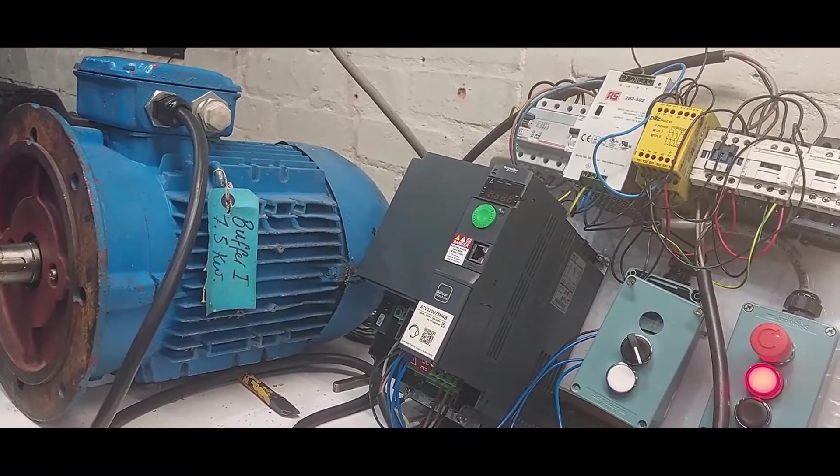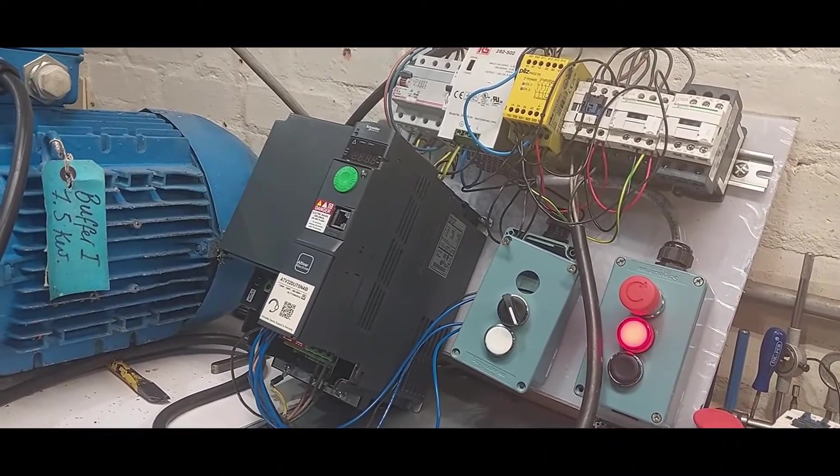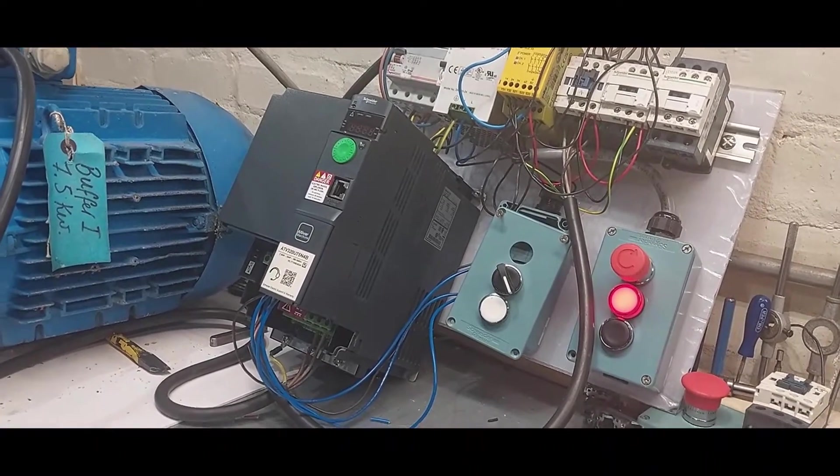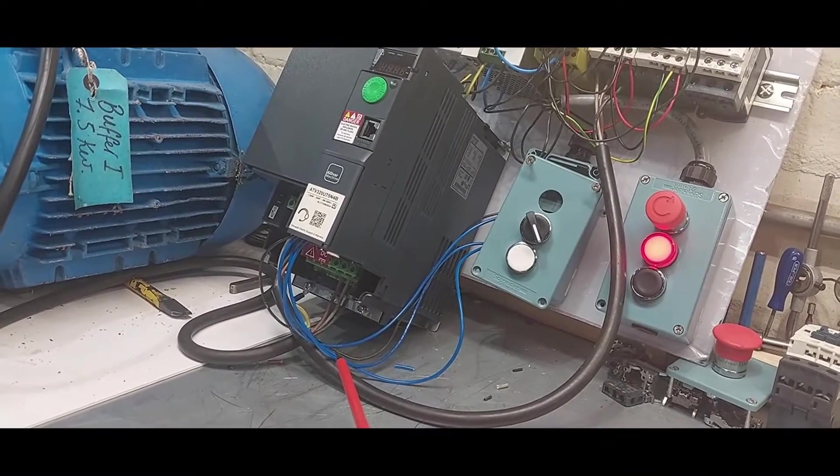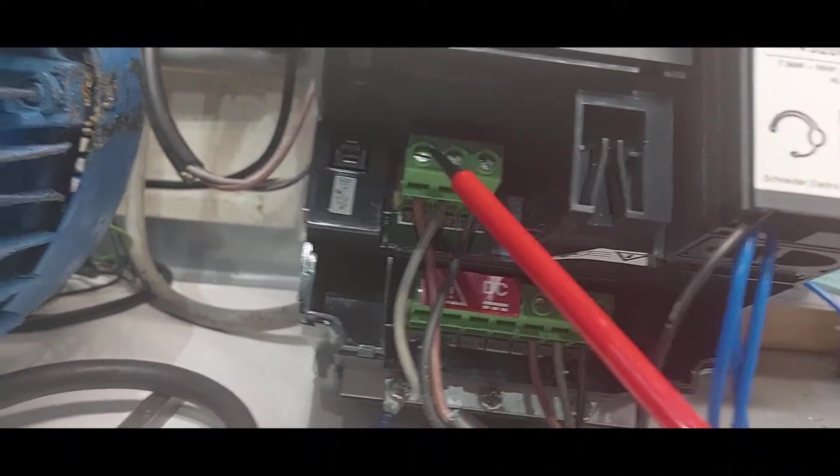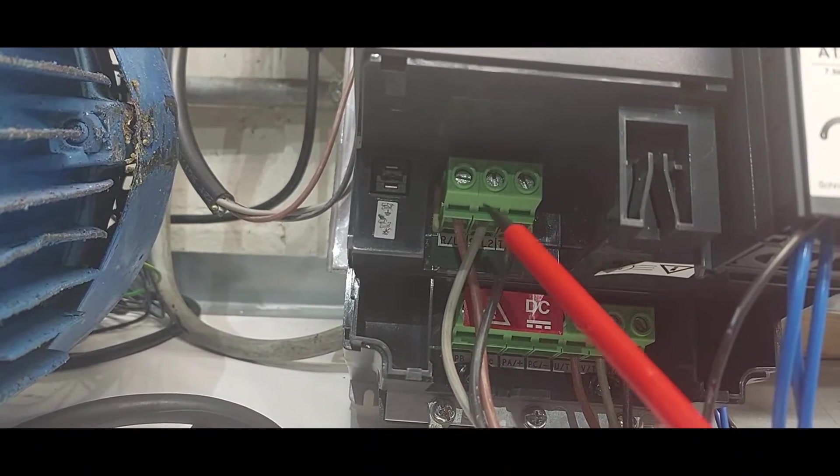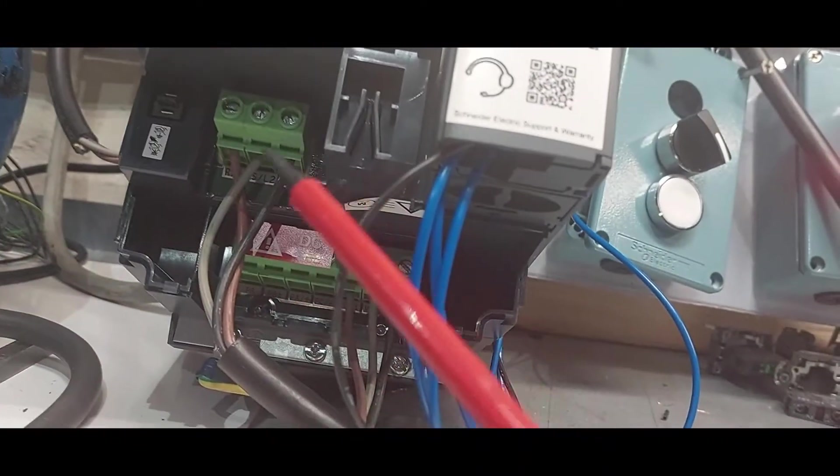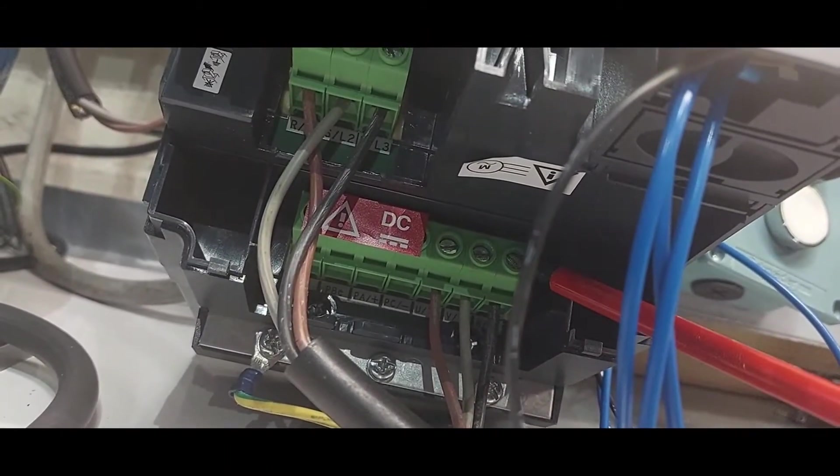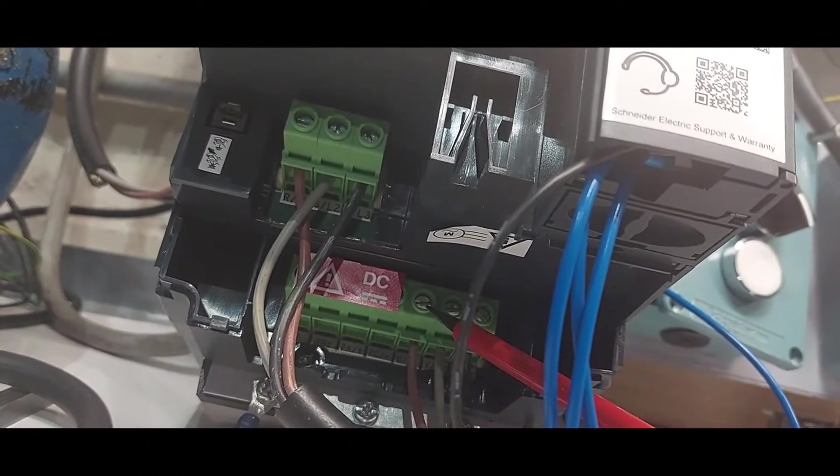The inverter is called a frequency variator because it contains a rectifier which converts the AC voltage. In this case, this is a three-phase AC voltage supplied through the mains. The AC voltage, 400 volts, is supplied through the mains—400 volts between two poles—and then it supplies the motor through its terminals, the power terminals.